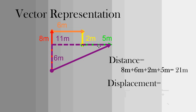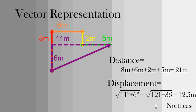So I'm going to find the hypotenuse of this purple triangle. So to do that, I pull out Pythagorean's theorem. So 11 squared plus 6 squared gets me 12.5 meters northeast. Since it's a vector, we've got to tell which direction it's going.